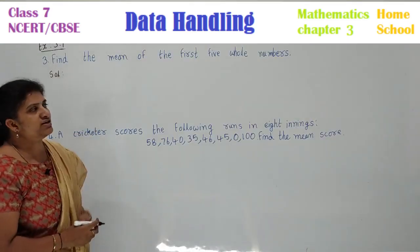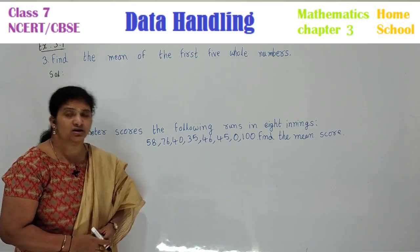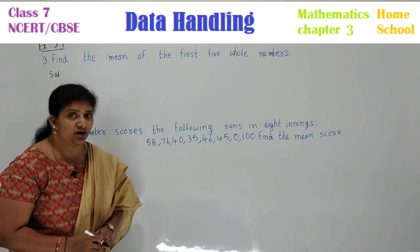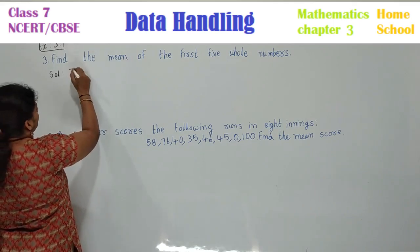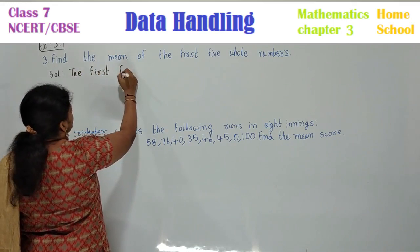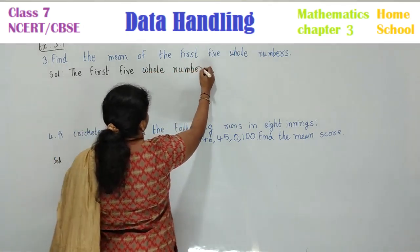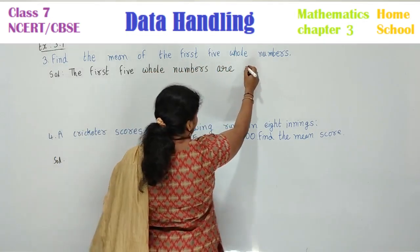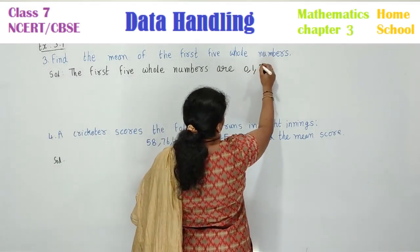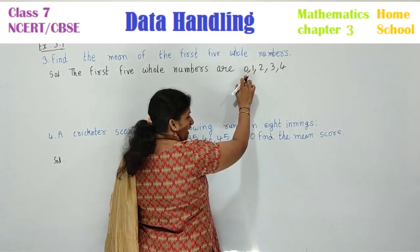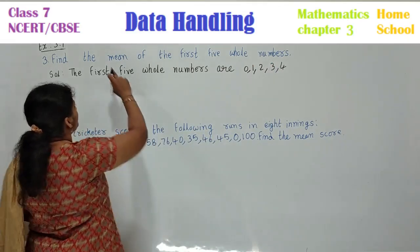See the third problem: find the mean of the first 5 whole numbers. What are whole numbers children? You all know natural numbers, even numbers, odd numbers, whole numbers, integers, rational - these all you have seen in your mathematics basics. What are whole numbers? Look here, the first 5 whole numbers are 0, 1, 2, 3, 4. Natural numbers along with 0 are called whole numbers.